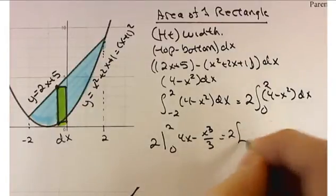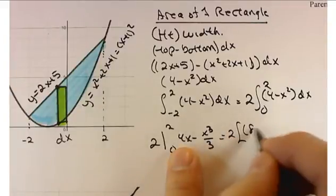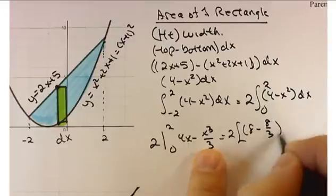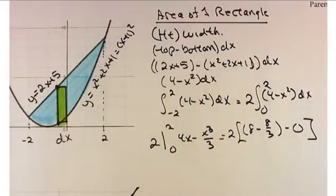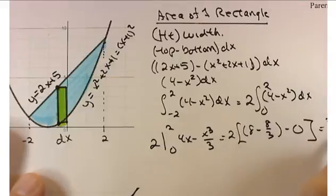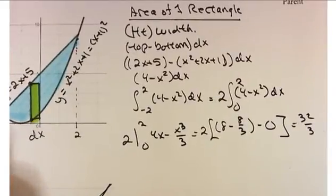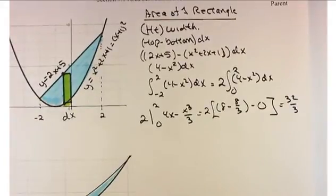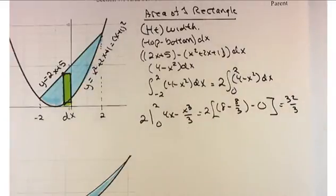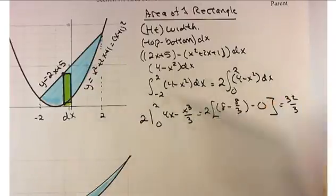Finishing up: it's going to be twice (8 minus 8/3 minus 0), which gives 32/3 when you do out all the math. You don't have to use that shortcut — it's just nicer than plugging in negative 2 and distributing the negative sign. It's a good trick to look out for if you have a symmetric interval like negative 2 to 2.